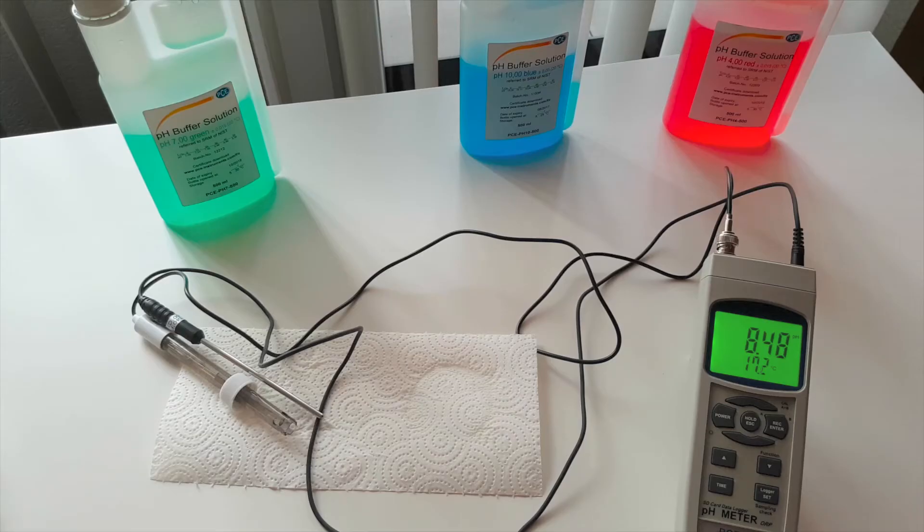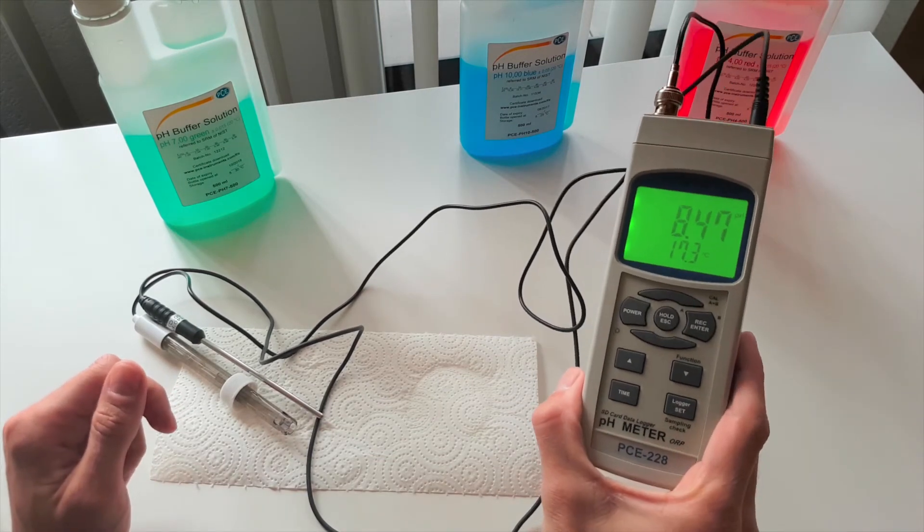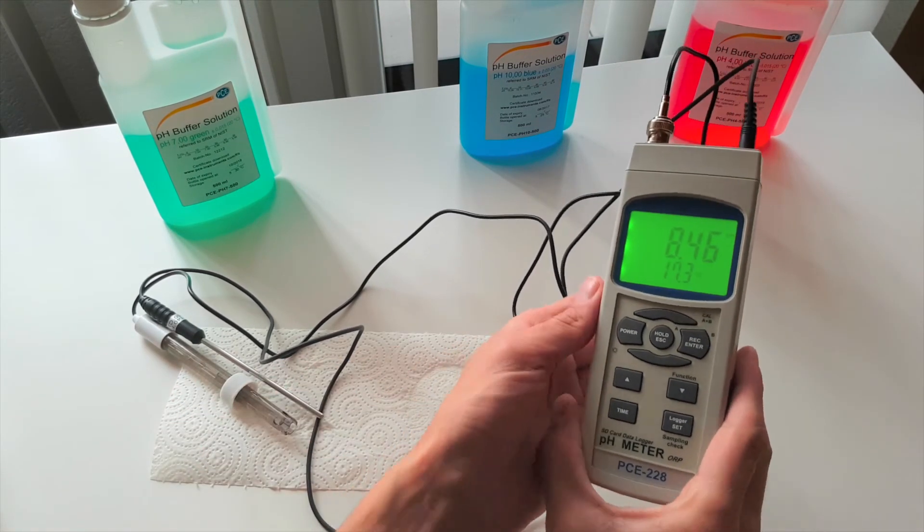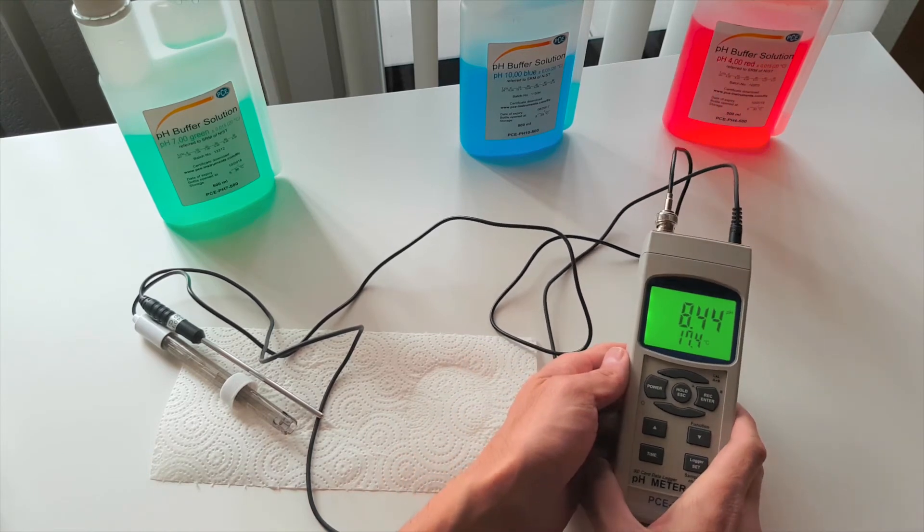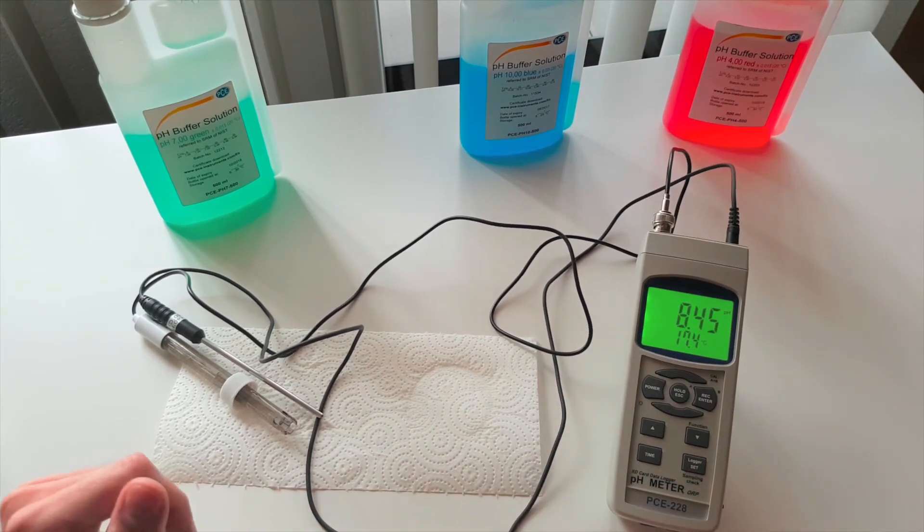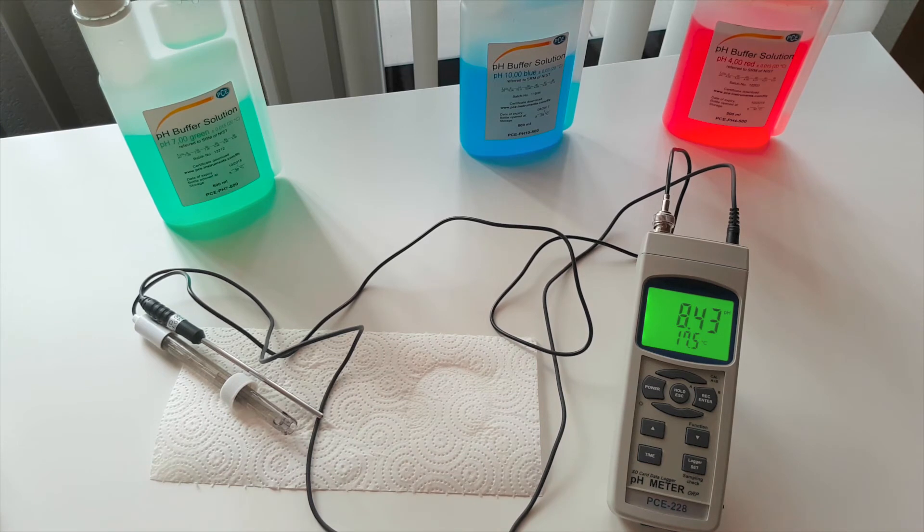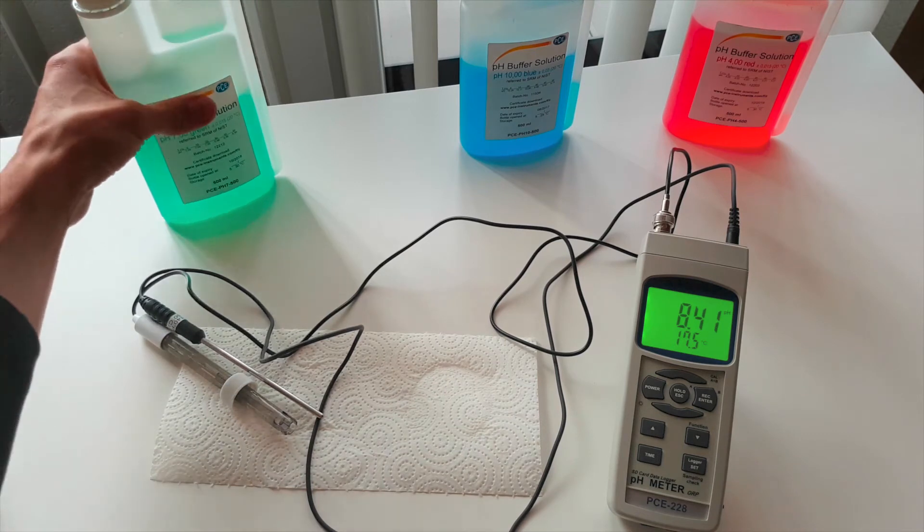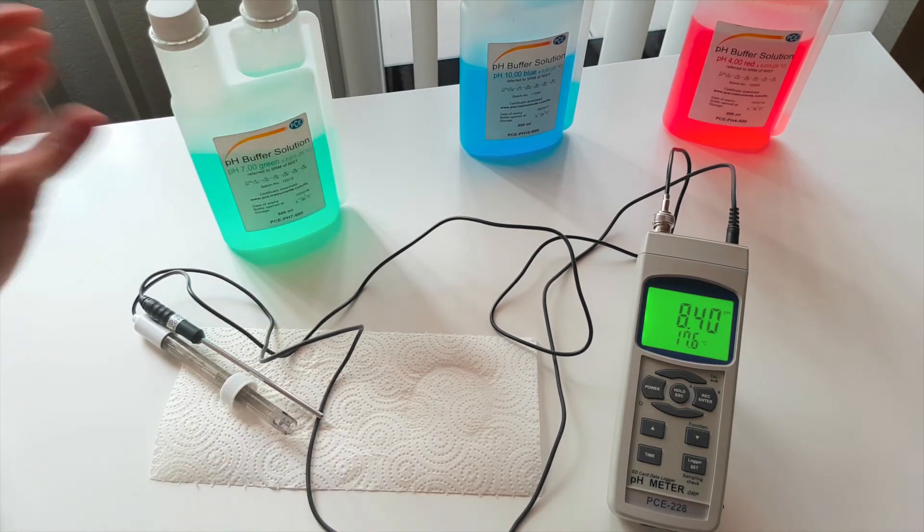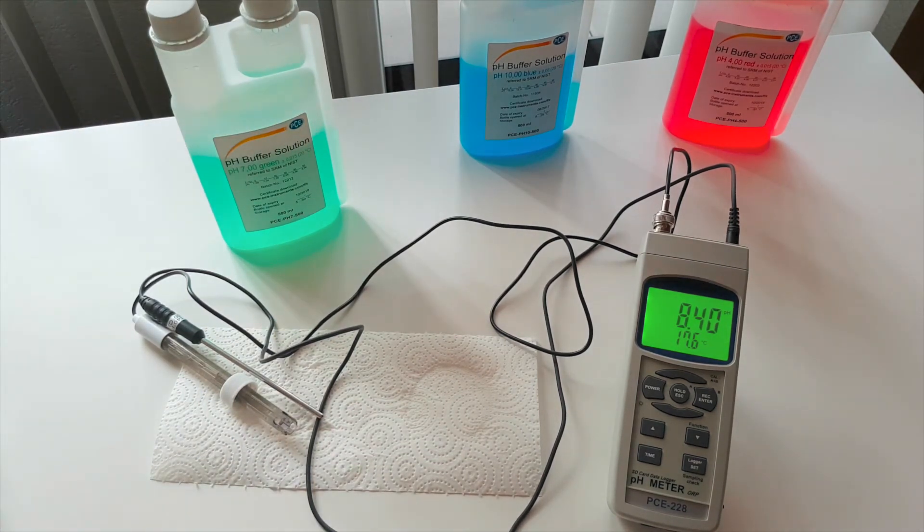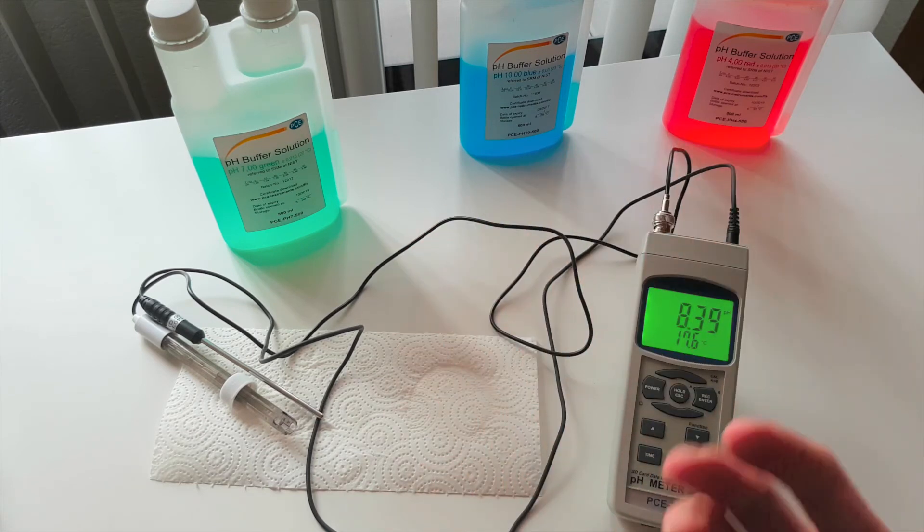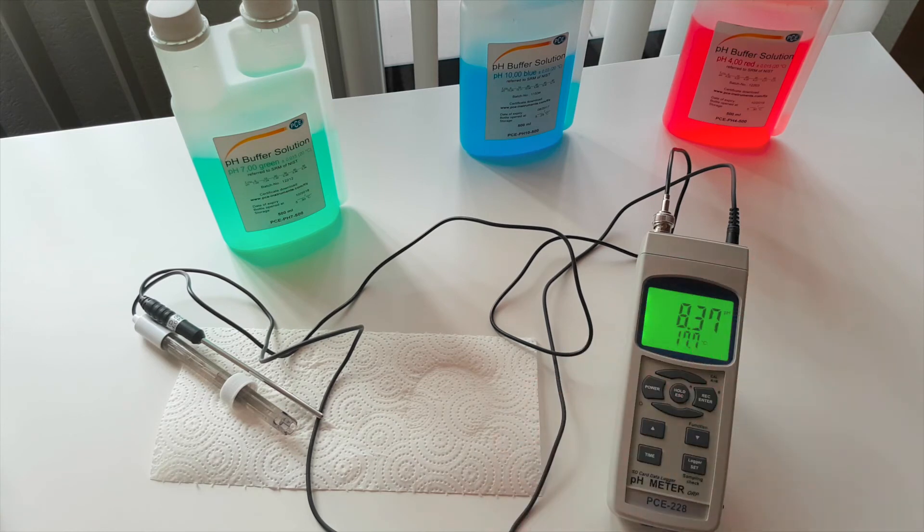So that was all with the measurements with the PC-228. From the firm PC instrument. A very good measuring device. With which you can very exactly measure values, determine and verify. What we have seen through the calibration is that the device is delivered exactly aligned. But despite this you have the possibility or should have the possibility after every test to check and maybe calibrate. Correspondingly a very good device. Until the next video. Bye.